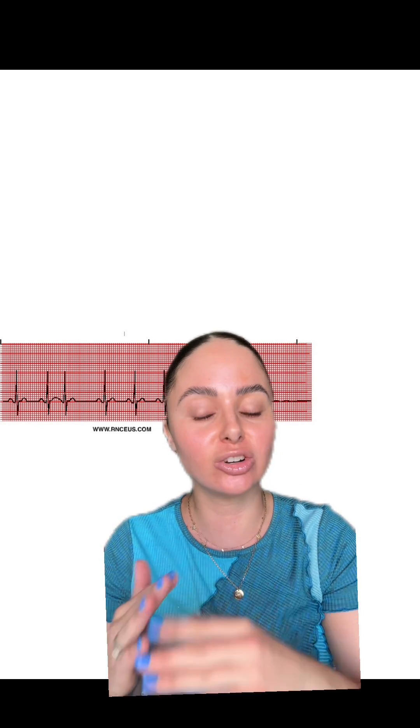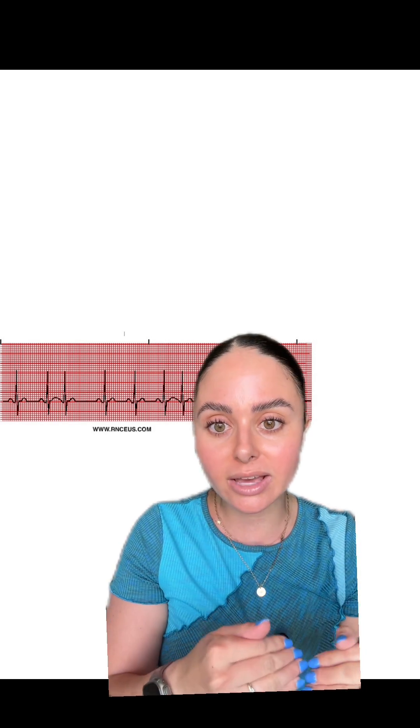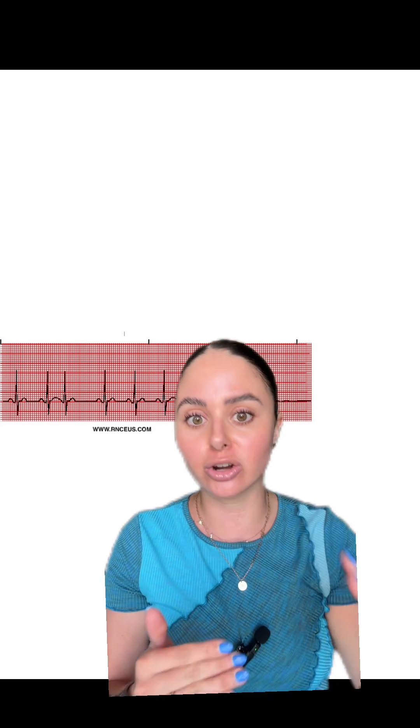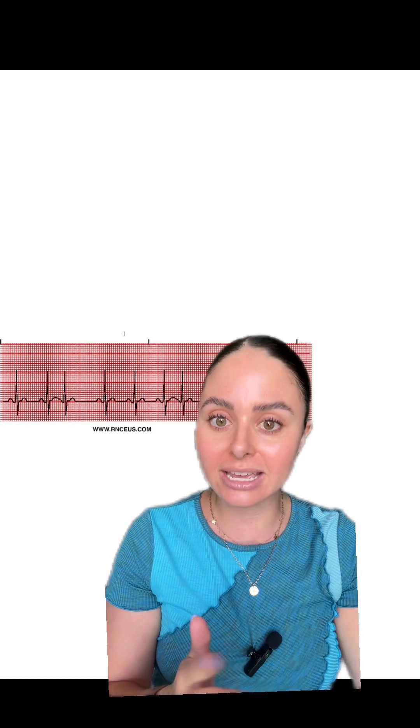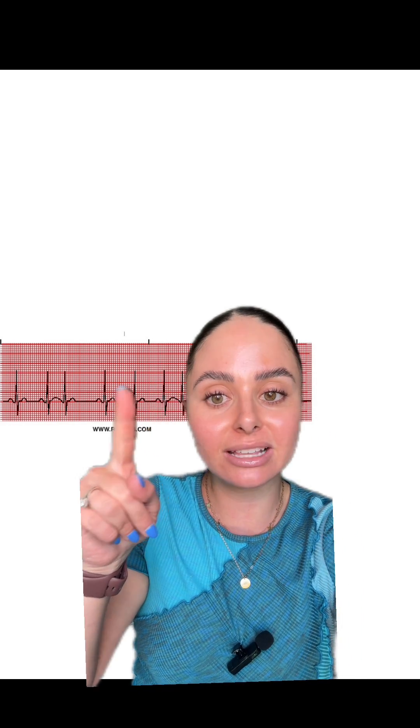The key is to look at your P waves. In a sinus arrhythmia, you should still have normal-looking P waves followed by your QRST. In a PAC, you're going to be missing that P wave or it's going to be abnormal.